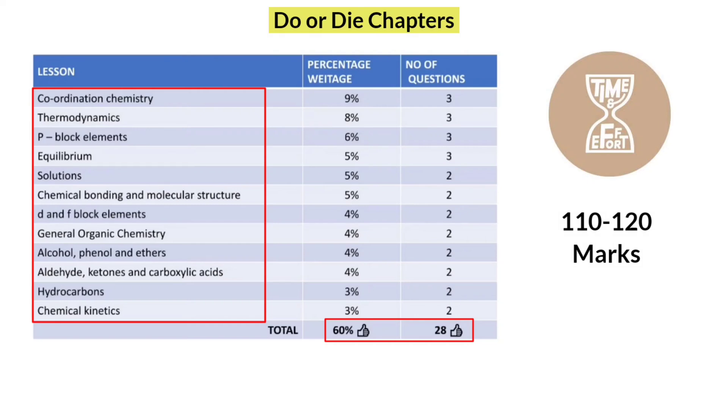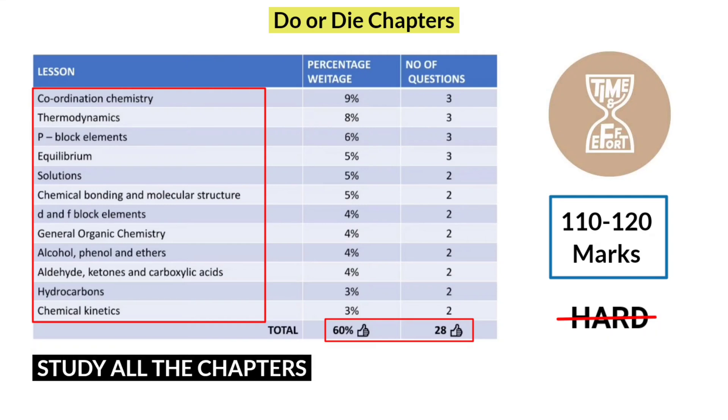It is true friends, without even touching the remaining chapters, you can comfortably score 120 marks. Still you think chemistry is hard? No friends, chemistry is not as hard as you think. But don't stick only to these 12 chapters because they may ask difficult questions from important chapters and very easy questions from non-important chapters. My suggestion is to study all the chapters.